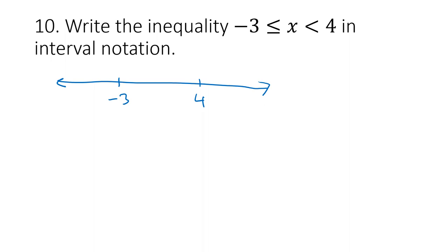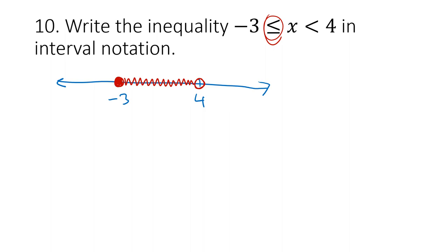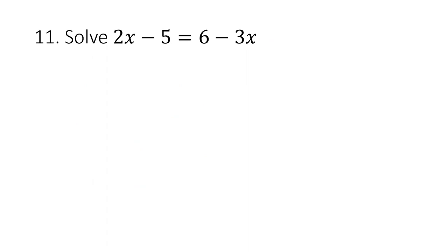For the inequality negative 3 ≤ x < 4: on the number line, we include negative 3 (filled dot, since it's less-than-or-equal) and exclude 4 (open dot). The interval notation uses a square bracket for negative 3 (included) and a round parenthesis for 4 (not included), giving [-3, 4). This represents all numbers between negative 3 and 4, including negative 3 but not including 4.